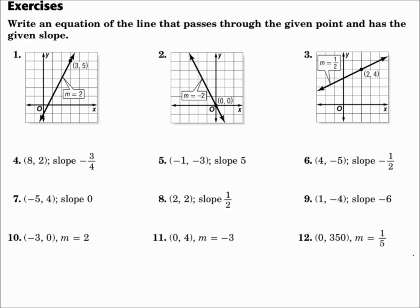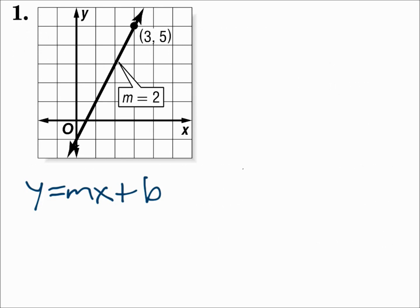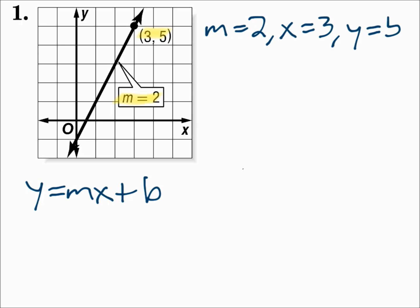Write an equation of a line that passes through the given point and has the given slope. Number 1: this line has a slope of 2 and it goes through the point. We know the slope — m equals 2. And it goes through the point. They didn't tell us what b is, but we can solve for b. If we use the point where x equals 3 and y equals 5, we can substitute m, x, and y into slope intercept form and solve for b.